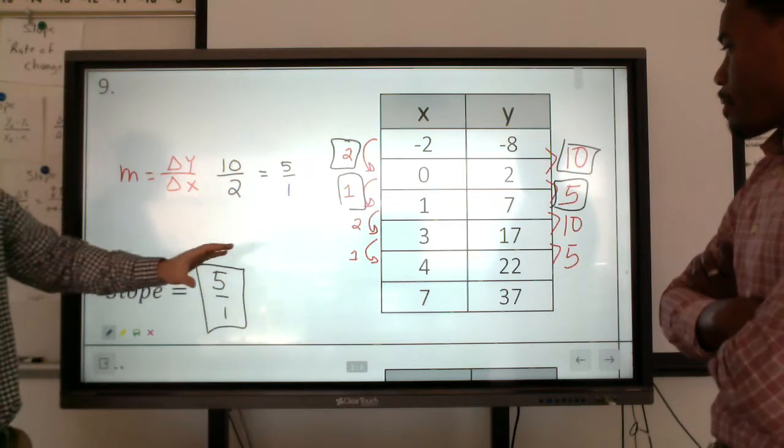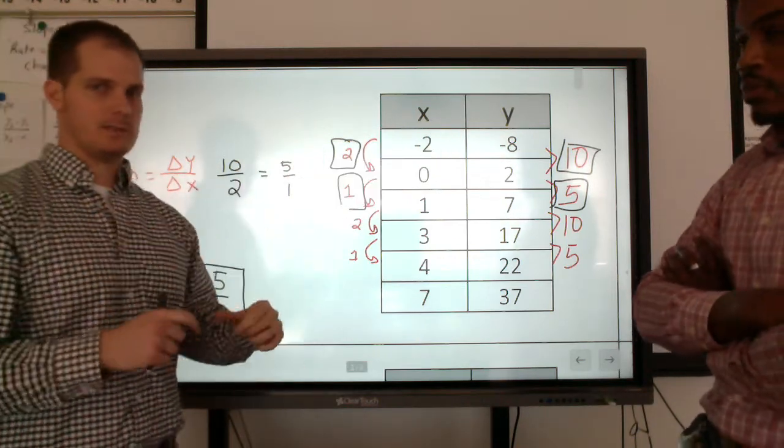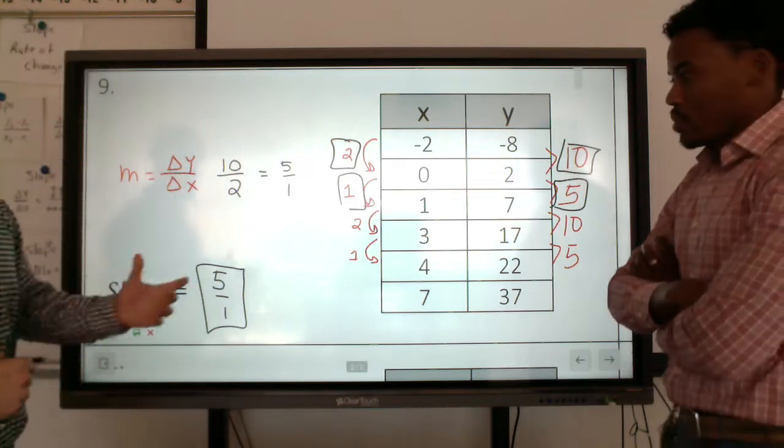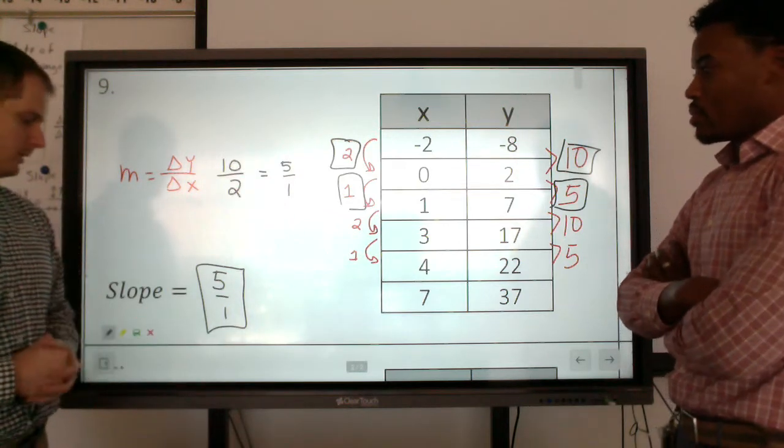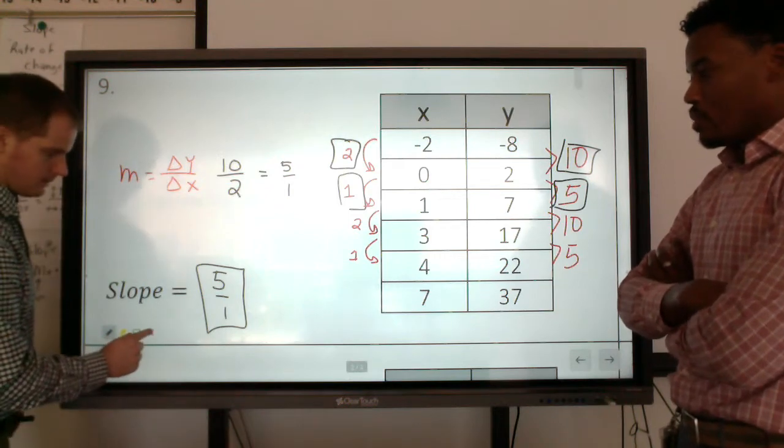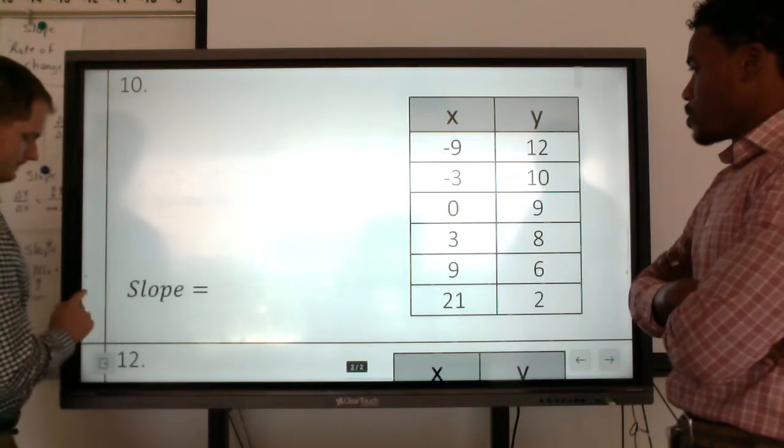And again, if you wanted to, instead of looking at all of the points, we could highlight just two specific points that we did before to find out the slope will simplify to 5 over 1. So good. Let's try another one of these. All right. This is fun. Okay. Let's do another one.